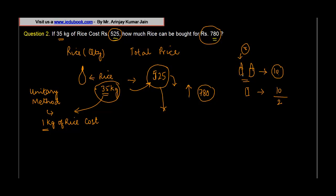price by number of pencils and I get five. Similarly in this case, what do I do? 525 is the cost of 35 kgs of rice, so if I have to compute the price for one kg, I will divide 525, which is the total price, by total quantity.